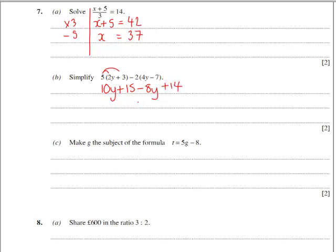Gathering like terms, 10y take away 8y is 2y. And 15 plus 14 is 29.